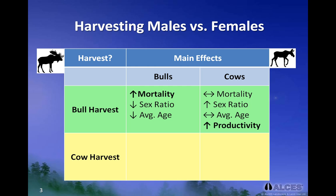So, at the population scale, the increase in mortality of bulls can be compensated by the increase in overall population productivity, which is the result of a shift in sex ratio favoring females over males.